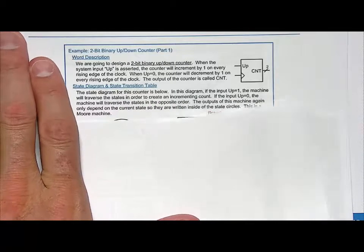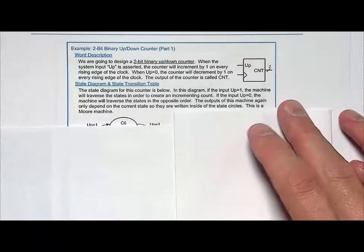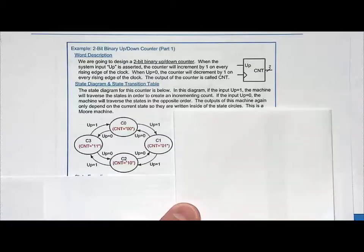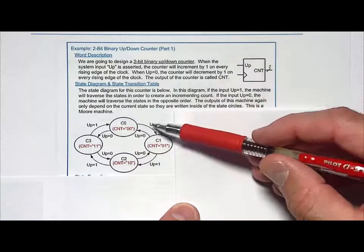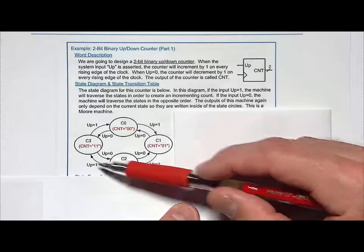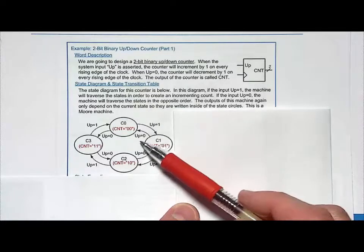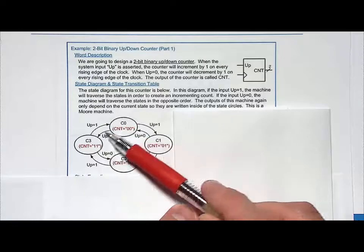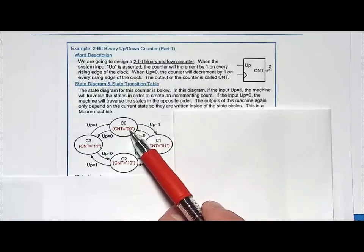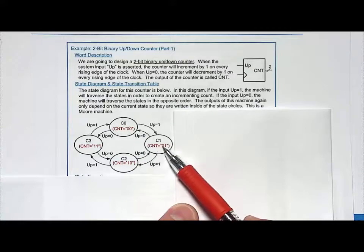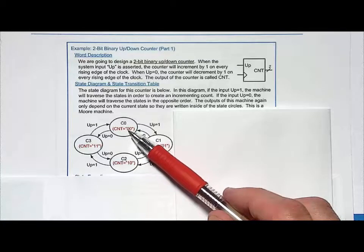Let's take a look at the state diagram. I'll have states C0, C1, C2, C3. I'll transition clockwise when up is one — so up equals one on each of those transitions around the circle. When up is zero, I'll traverse the opposite way, counterclockwise. For the outputs, I'm going to use state-encoded outputs: CNT equals 00 in C0, 01 in C1, 10 in C2, and 11 in C3. So I allow the states themselves to dictate the output value.